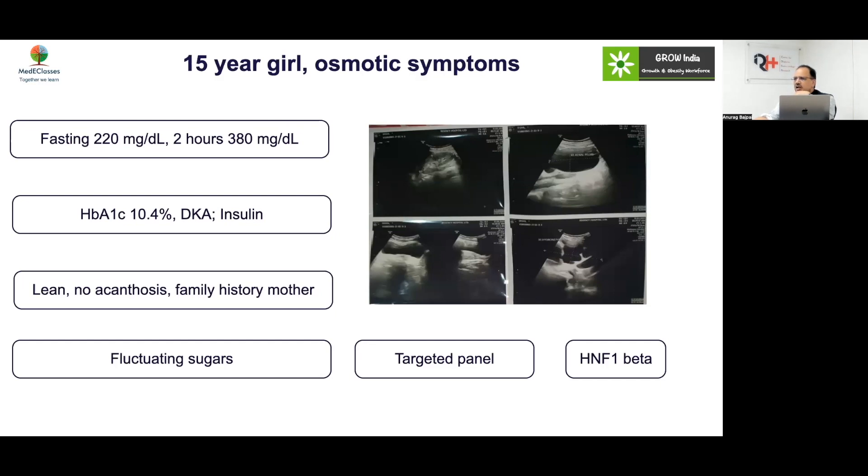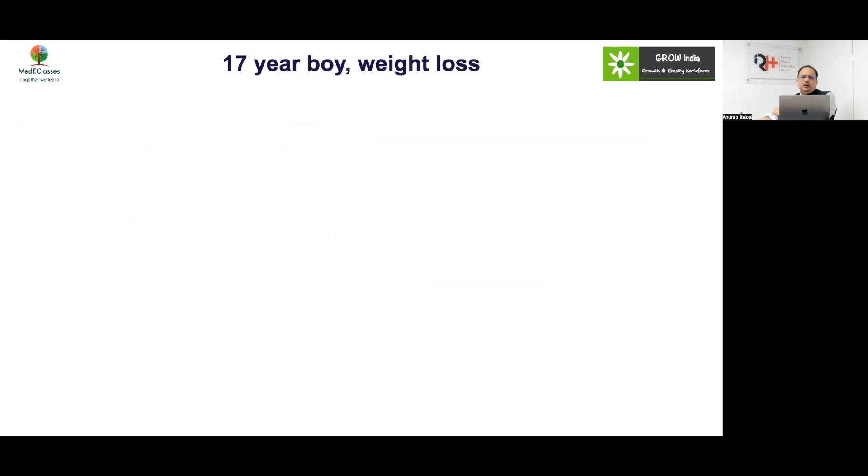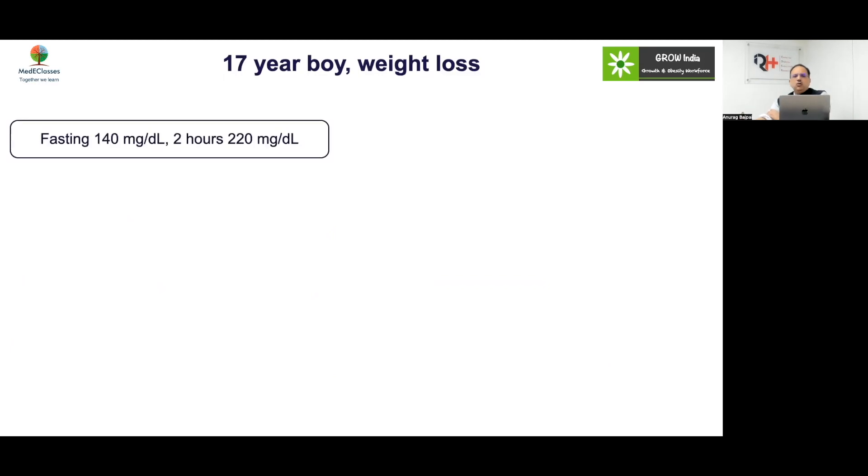Renal cysts were seen in both the mother and child, and an HNF1 beta defect was confirmed.